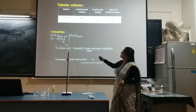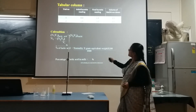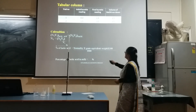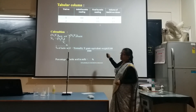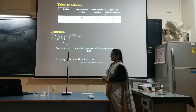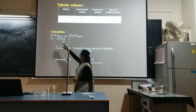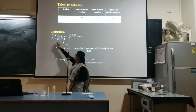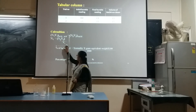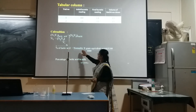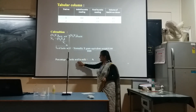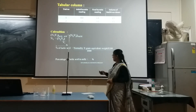For the calculation: trial 1 — initial reading 0.00, final reading 1.5, so volume of NaOH = 1.5 ml. Trial 2 — starting from 1.5, colour development at 3.0 ml, so volume = 1.5 ml. Using N1V1 (lactic acid) = N2V2 (NaOH), so N1 = N2 × V2 / V1. Percentage of lactic acid = normality of lactic acid × gram equivalent weight × 100 / 1000.